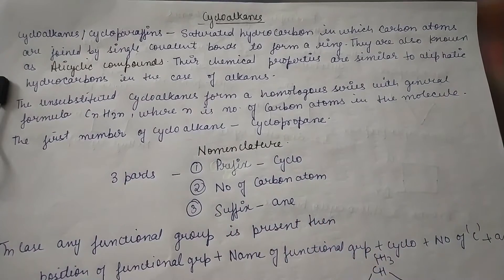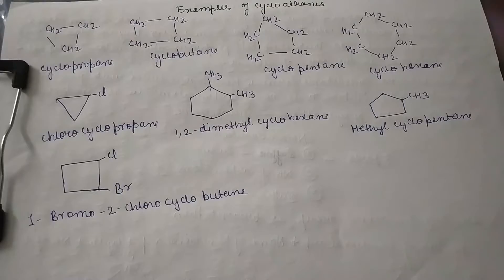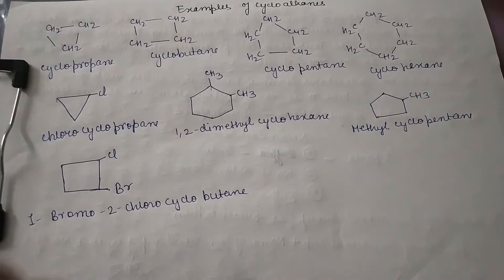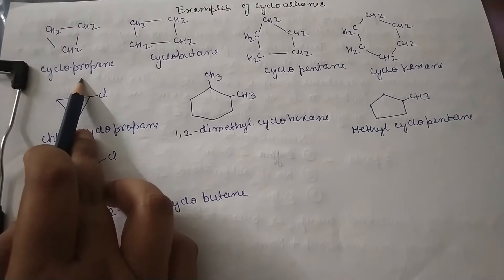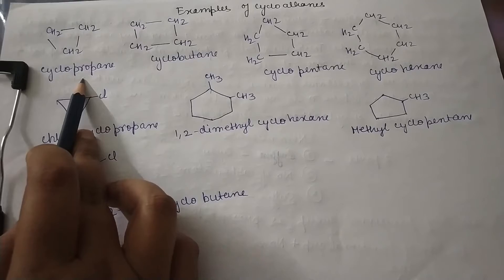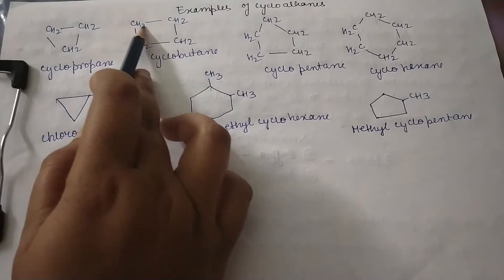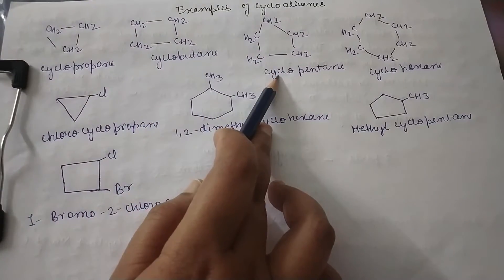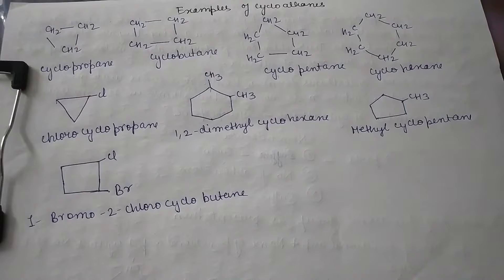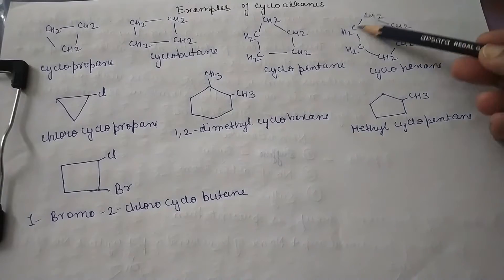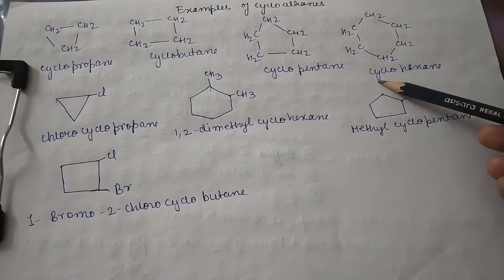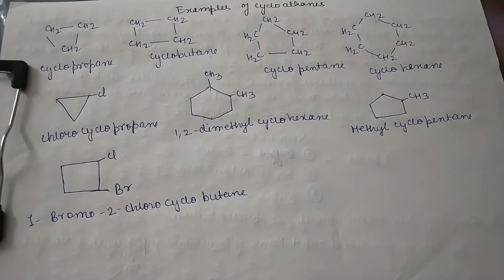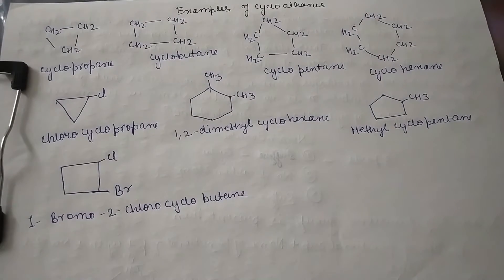Let's see some examples of cycloalkane. This is cyclopropane with 3 carbons, then 4-carbon cyclobutane, 5-carbon cyclopentane, and the 6-carbon ring is cyclohexane.